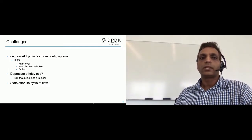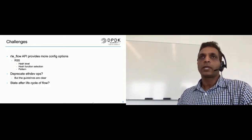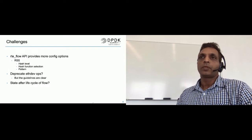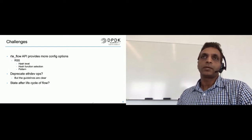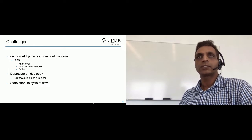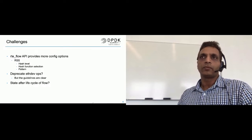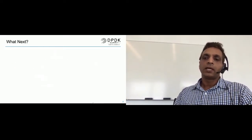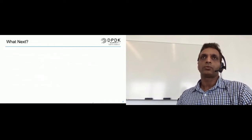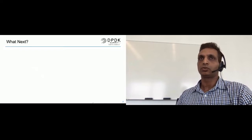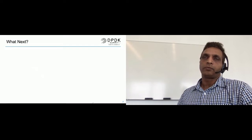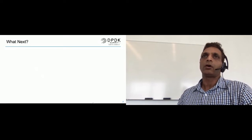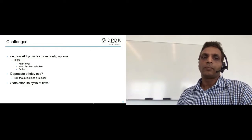The last thing is the flow life cycle. If I created a flow and the application configured RSS for a certain pattern, and then that flow is deleted by the application — what should the PMD do? Should it revert back to the previous or default setting, or just leave it? As a PMD developer, I'd like to see that information clearly in the documentation rather than having to look through different implementations.